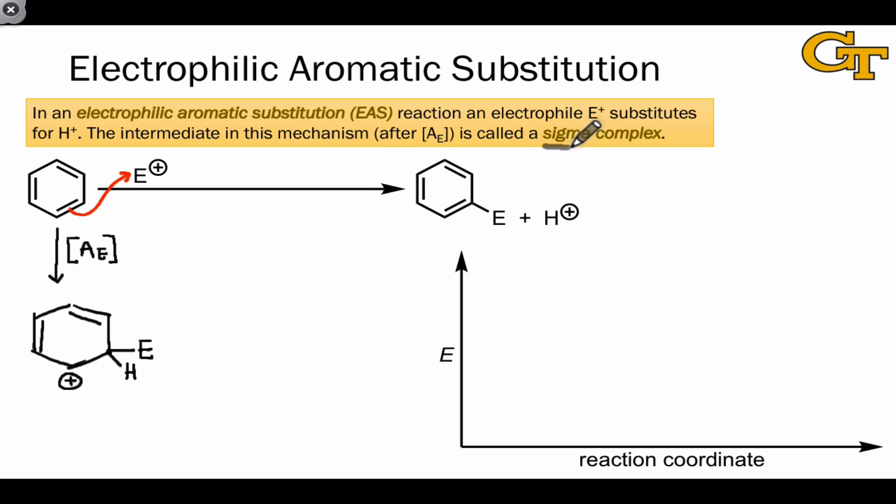This intermediate is called a sigma complex because of the new sigma bond between the electrophile and one of the aromatic carbons. One important thing to note about these sigma complex intermediates is that they always have a number of resonance structures that show the delocalization of positive charge over multiple positions. In fact, what we can say in general is that after the electrophile adds to one of the positions within benzene, the positive charge is shared by the carbons that are ortho and para with respect to the position that bound to the substituent.